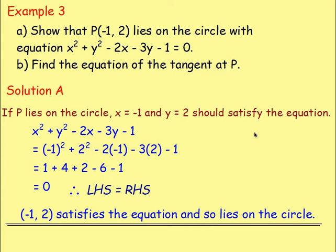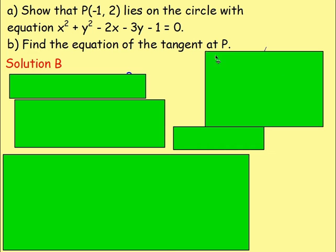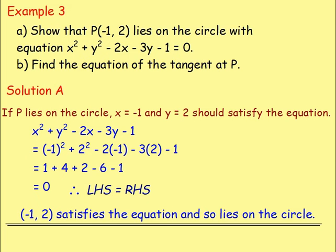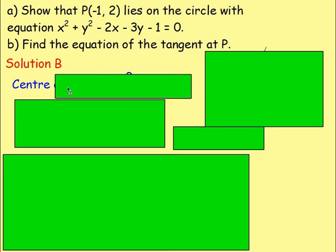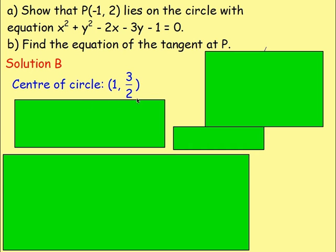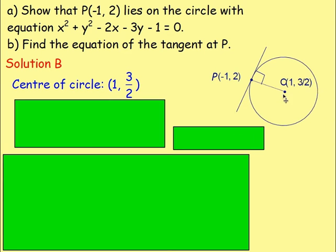Part B: find the equation of the tangent at P. Write down the centre of this circle. When in general form, take the x coefficient, halve it, change the sign; take the y coefficient, halve it, change the sign. If you're unsure, look back to lesson 3 in this chapter. The centre is (1, 3/2). You have point P(−1, 2) where the tangent meets the circle.